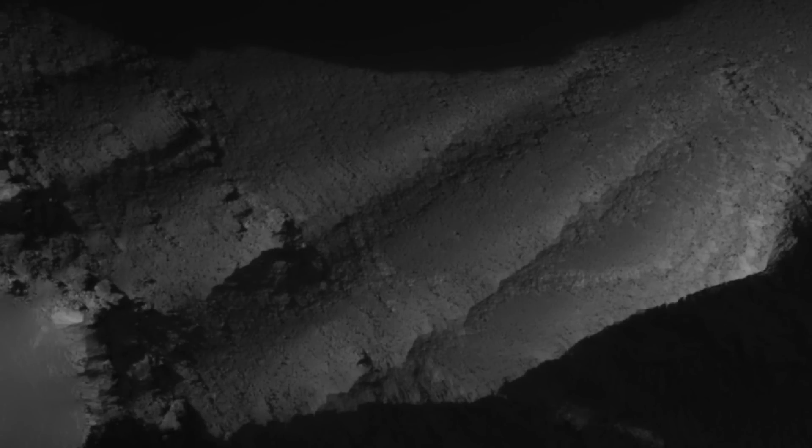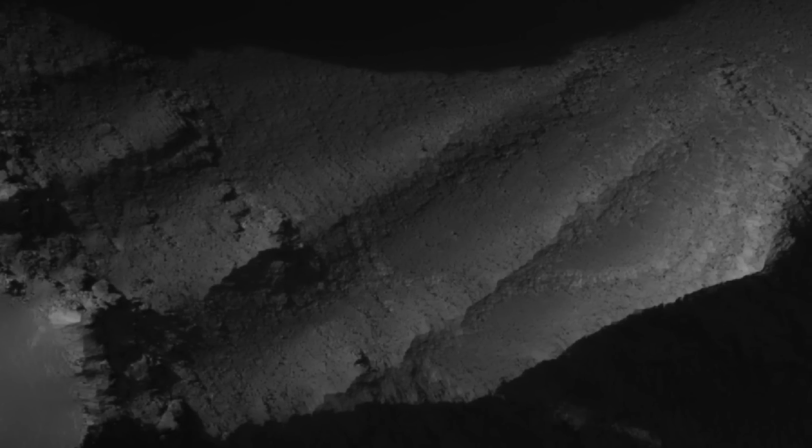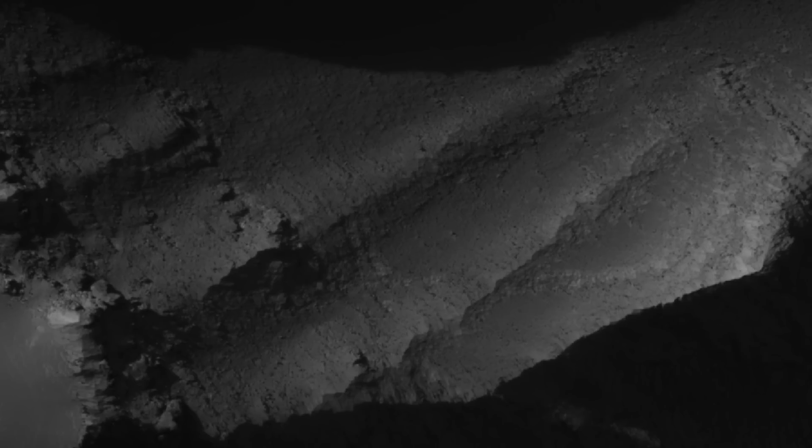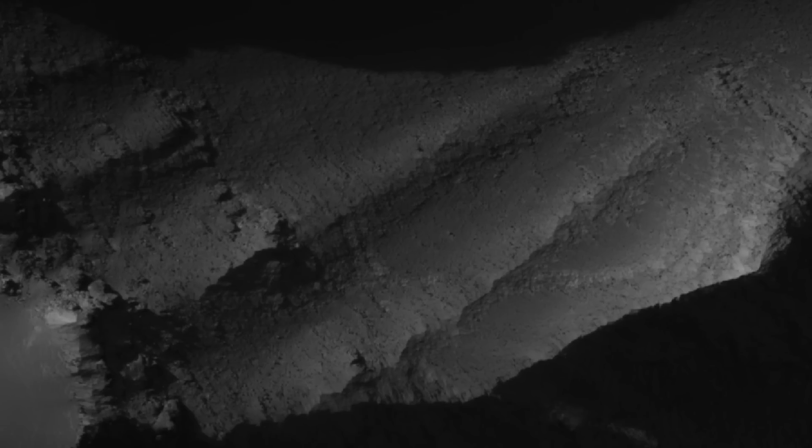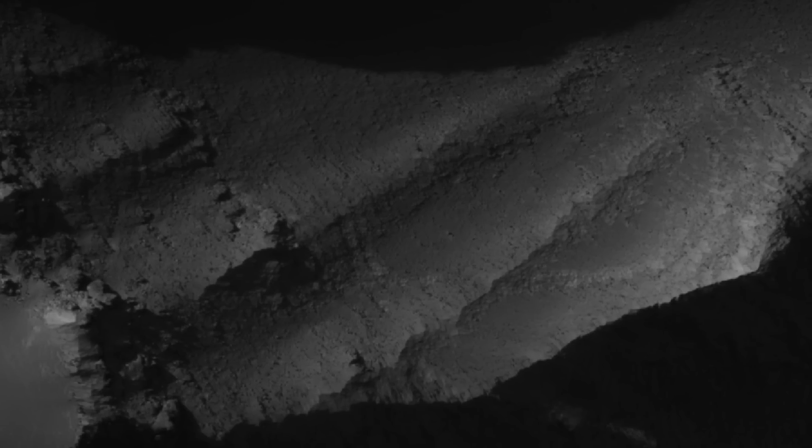The watery region of Valles Marineris is abundant despite unfavorable conditions at the equator. Because of this, it has been compared to the permafrost regions of Earth, where ice is constantly present underneath the dry soil due to lower temperatures.